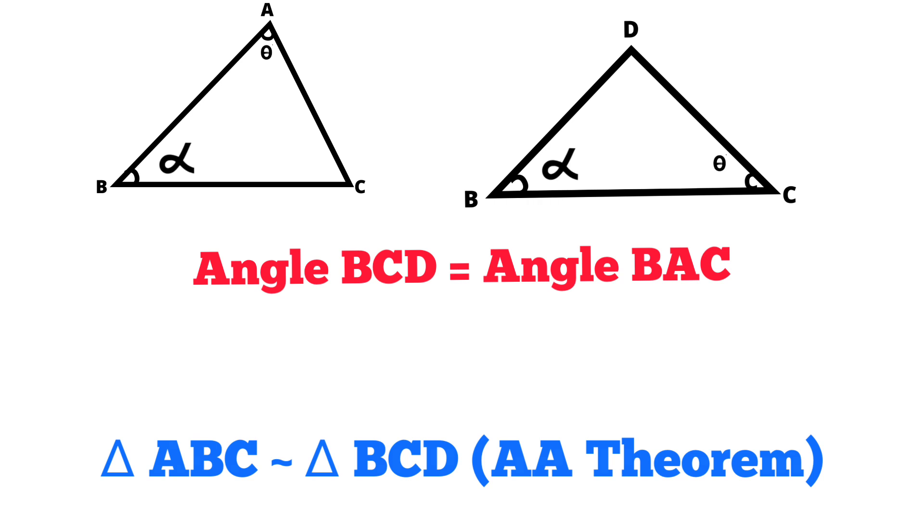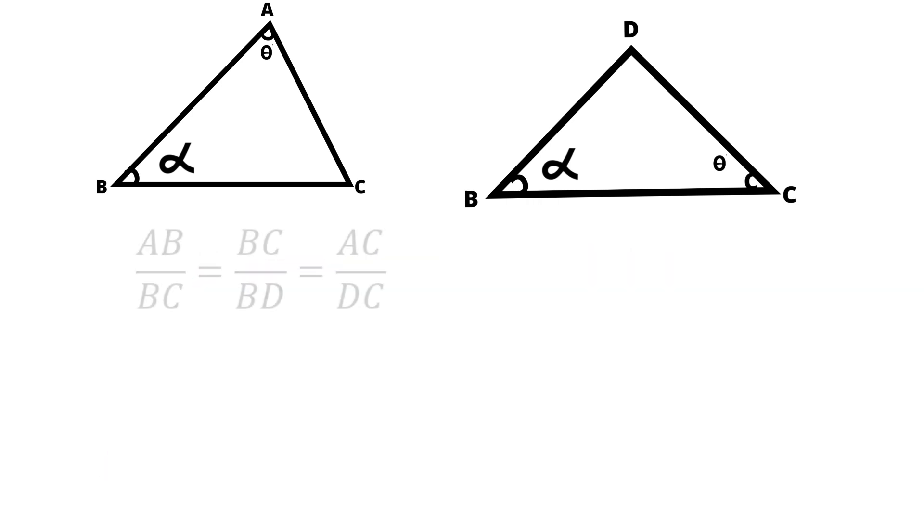Then, with the help of that, we can write AB by BC equals BC by BD equals AC by DC. That is, sides are in equal proportion.